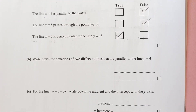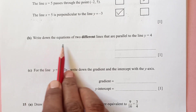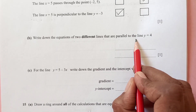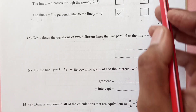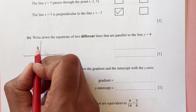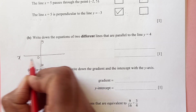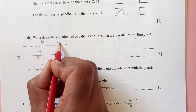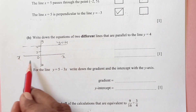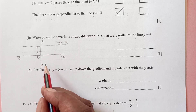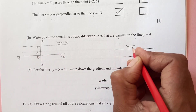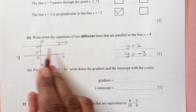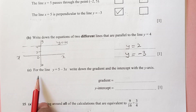Part b: write down the equations of two different lines that are parallel to y = 4. The line y = 4 is a horizontal line. Any other horizontal line is parallel to it, so we can take y = 2 and y = −3 as our two answers.